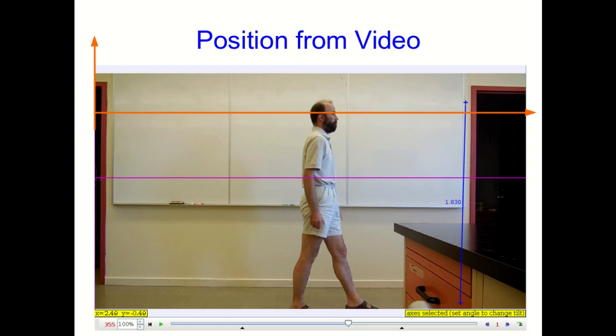The next thing we'd like to be able to do is draw a position versus time graph as another representation of my motion. And so we're going to need to be able to get positions at times, and we can get that now that we have axes and so on. So there's the origin, and so a position vector just points from the origin to me. And I'm still using the middle of my head as the proxy for my location. So there's a position vector.